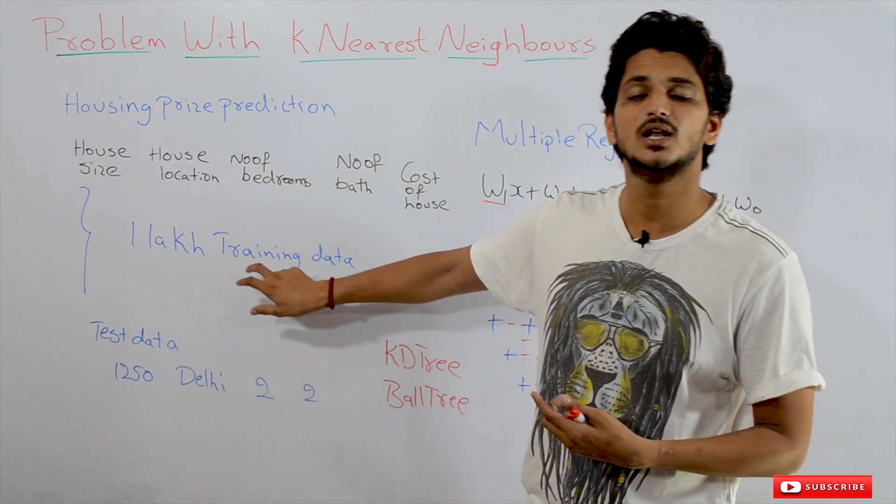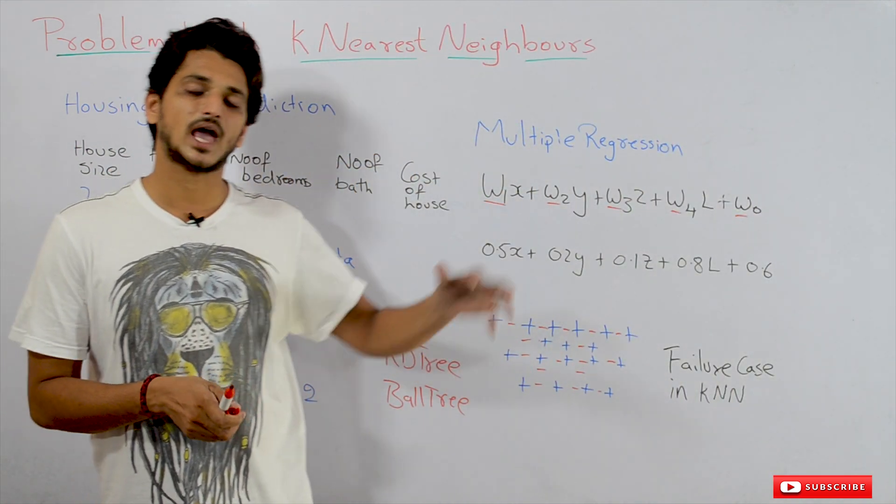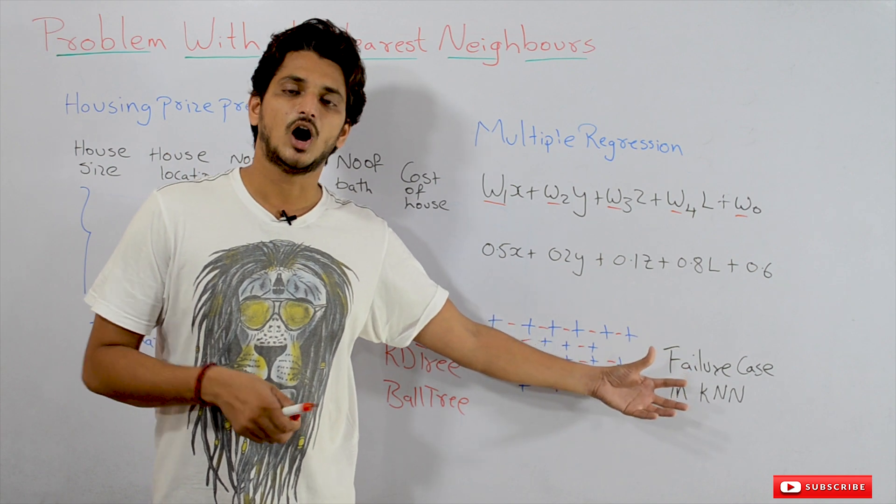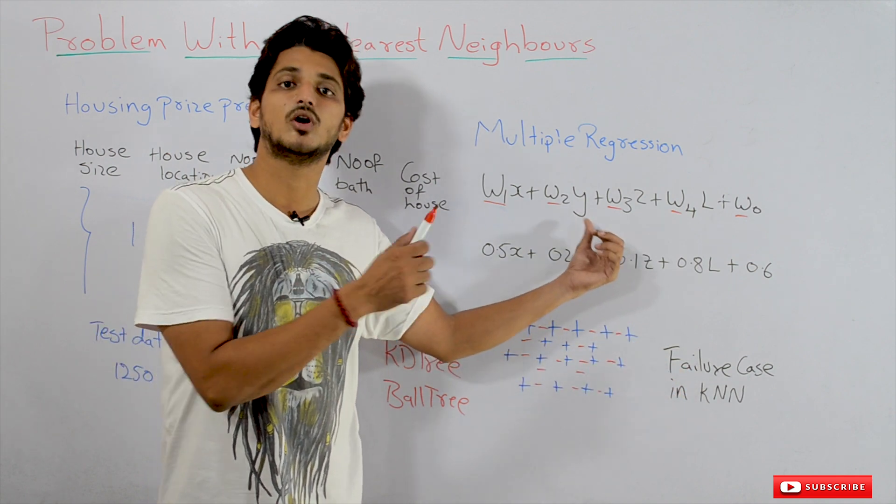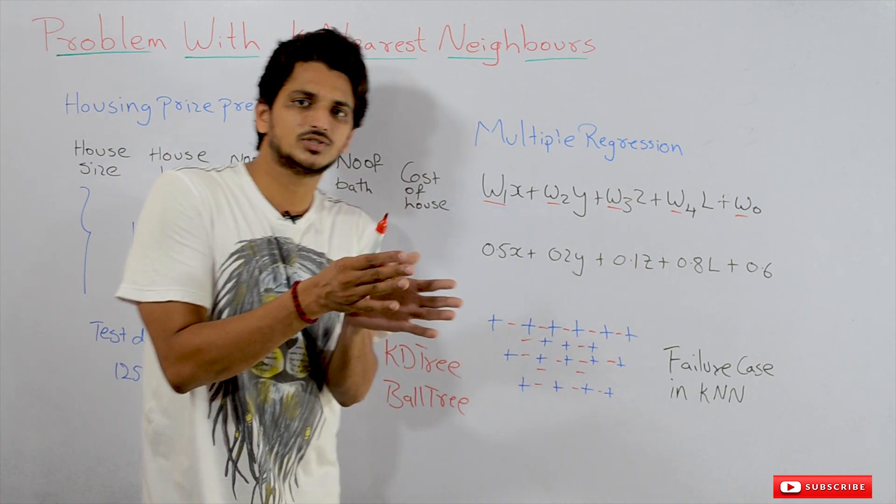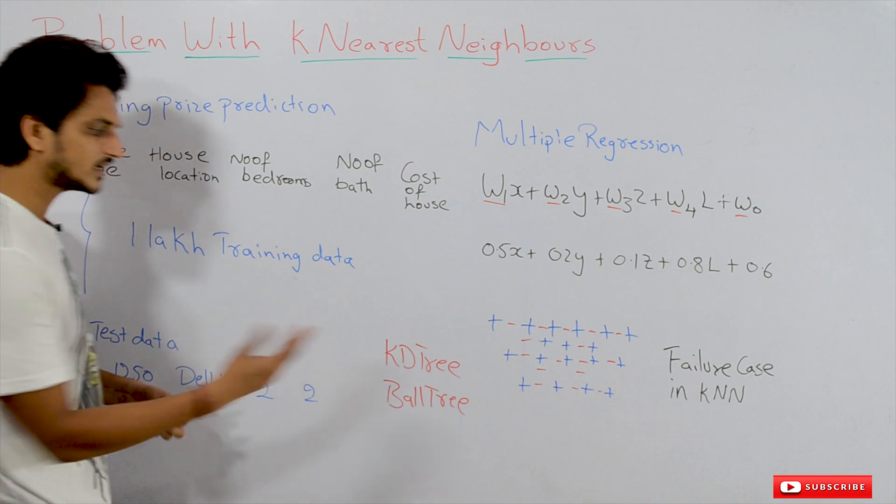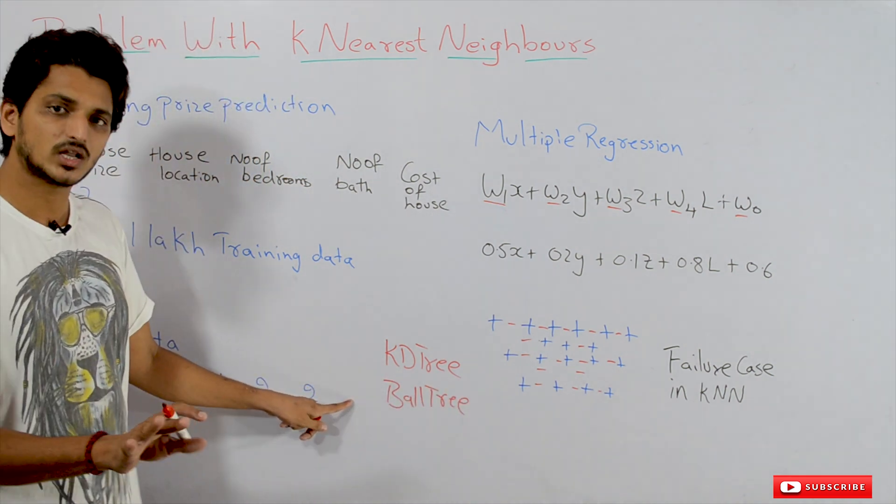This is computationally very costly. That's the problem with non-parametric models. To reduce the computational cost, they have used data structures called KD-tree and Ball-tree. We are not going to discuss these data structures here because our syllabus is not about data structures.